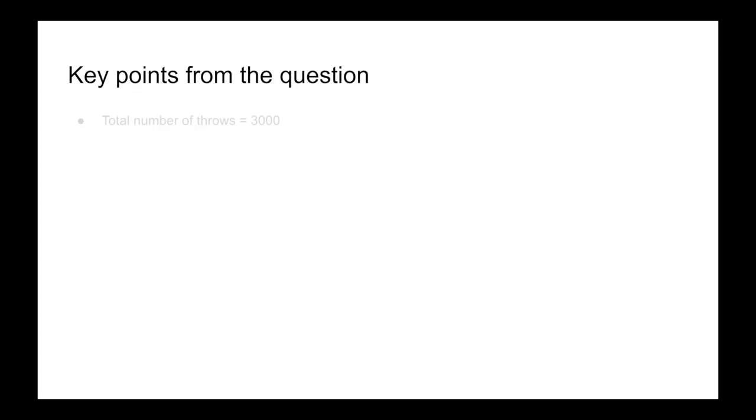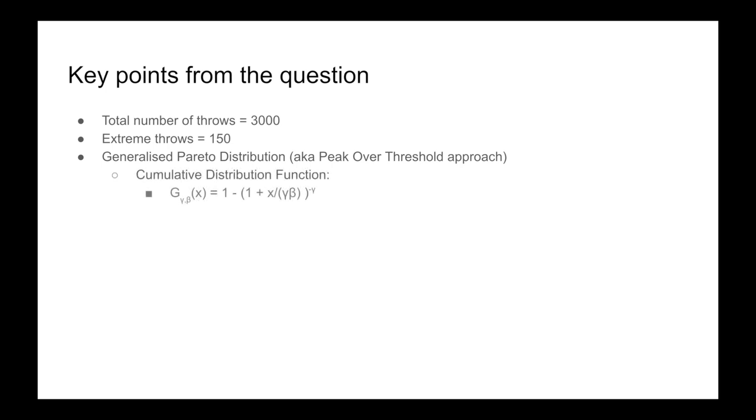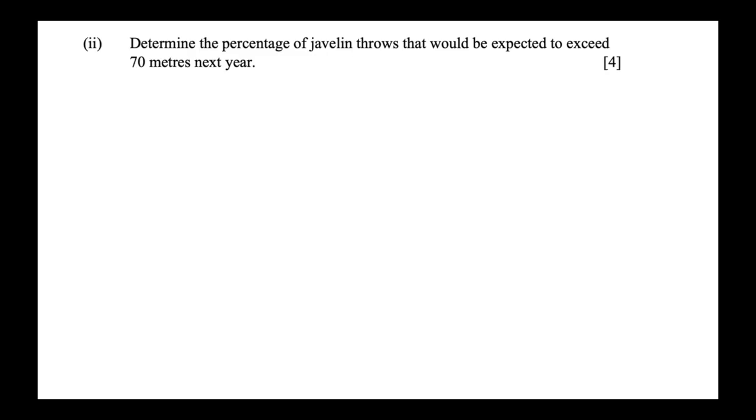The key points from this question: total throws was 3000, extreme throws were 150, we're using the generalized Pareto distribution - otherwise known as the peak over threshold approach - and that has the cumulative distribution. Our limiting function is as follows, and we've been told what the various parameters are. Our threshold is 50, our gamma is 3, our beta is 15. Now when the question says determine the percentage of javelins thrown that would be expected to exceed 70 meters next year, we just need to apply our theory.